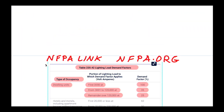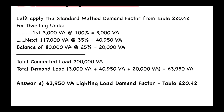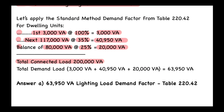Let's apply the standard method demand factor from Table 220.42 for dwelling units. We take the first 3,000 VA at 100%, giving us 3,000 VA. Then we take the next 117,000 VA at 35%, giving us 40,950 VA. Then we take the balance of 80,000 VA at 25%, giving us 20,000 VA. Notice that 3,000 + 117,000 + 80,000 equals our total connected load of 200,000 VA.